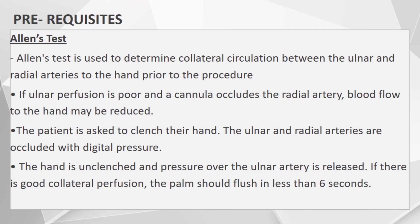Coming to the prerequisites, we have to perform the Allen's test to determine the collateral circulation between the ulnar and radial arteries to the hand prior to the procedure. If the ulnar perfusion is poor and if the cannula in the radial artery gets occluded, the blood flow to the hand will be compromised. For this procedure, we ask the patient to clench the hand, and the ulnar and radial arteries are occluded with digital pressure. Then the hand is unclenched, and the pressure of the ulnar artery only is released. If there is good collateral perfusion, the palm should flush in less than six seconds.